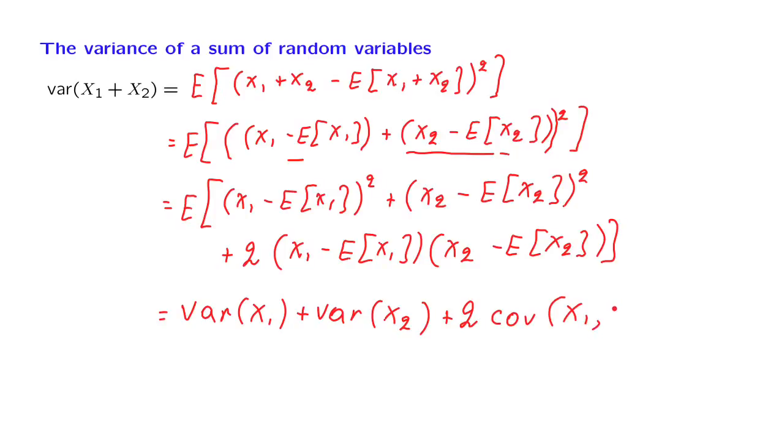So this is the general form for the variance of the sum of two random variables. In the case of independence, the covariance is zero and we just have the sum of the two variances. But when the random variables are dependent, it is possible that the covariance will be non-zero and we have one additional term.